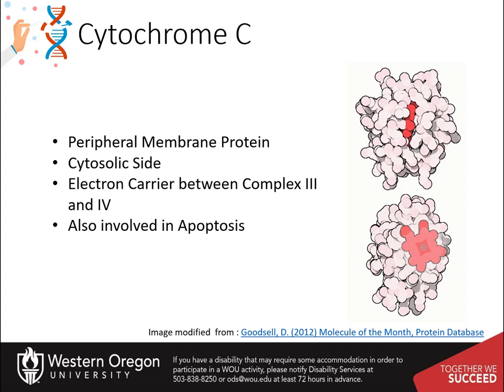The iron ion readily accepts and releases a single electron. Thus, cytochrome C can carry electrons from complex III to complex IV one at a time. It also can only carry electrons — it cannot carry protons. This is a problem, as we have been transferring two electrons and two protons as a unit up until this point.